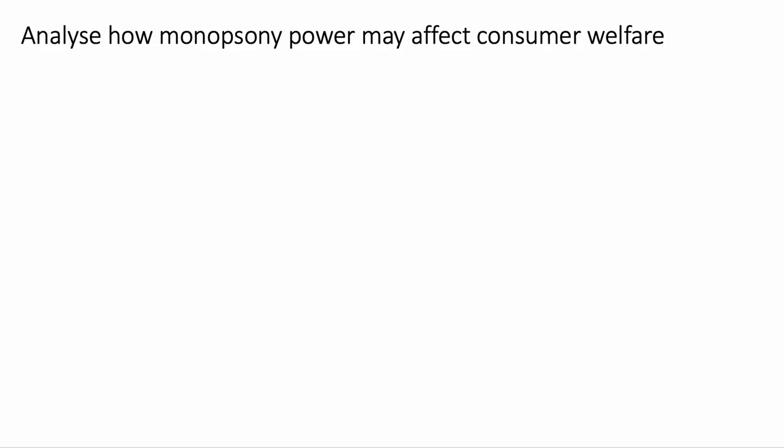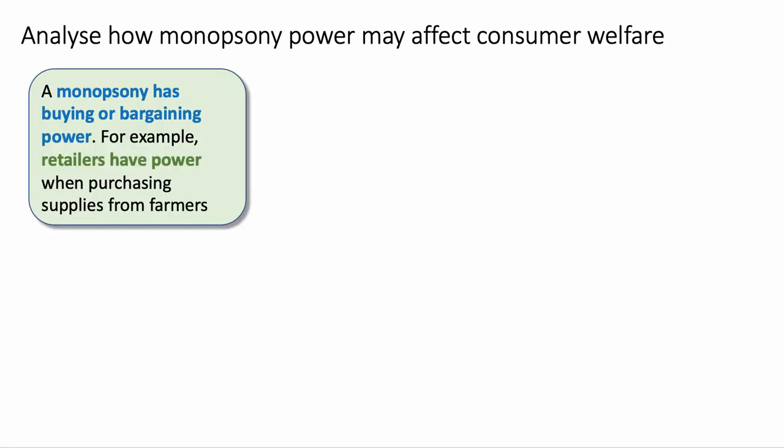Here's our task: analyze how monopsony power may affect consumer welfare. Always good to start with a clear definition. A monopsony is a business that has buying or bargaining power. A good example would be a retailer like Asda, Tesco, or Sainsbury's — they have power when they're buying supplies from farmers, growers, and other manufacturers.